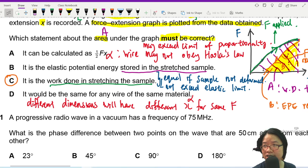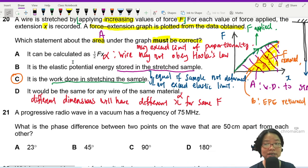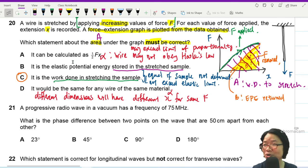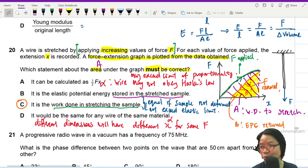So there's no permanent extension here. This orange line goes back to origin. So this means the elastic limit is not exceeded. So the safest bet here would be C. Statement questions. And that's it for question 20.